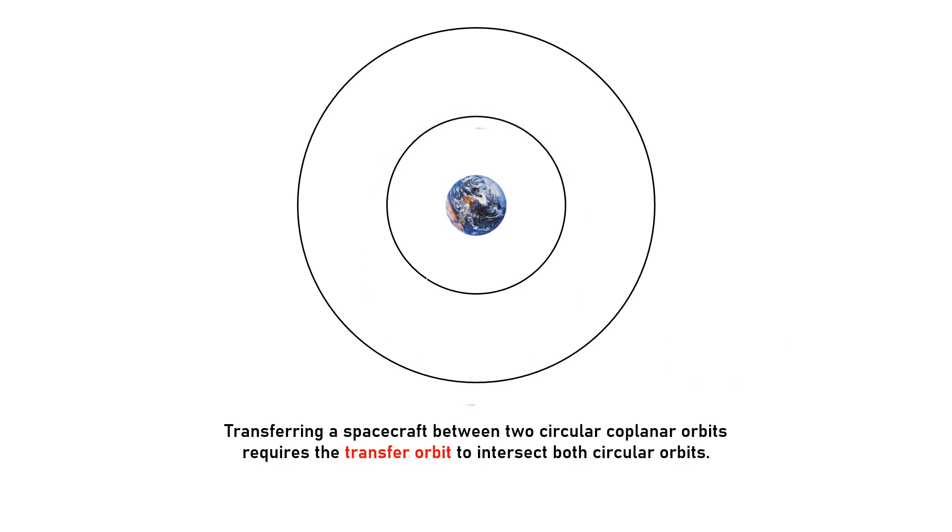In a general case where the transfer ellipse intersects the orbits at points other than its perigee or apogee, we can call this a non-Hohmann maneuver.